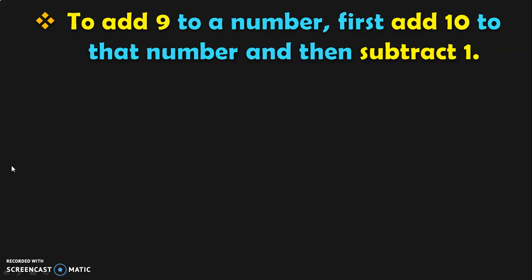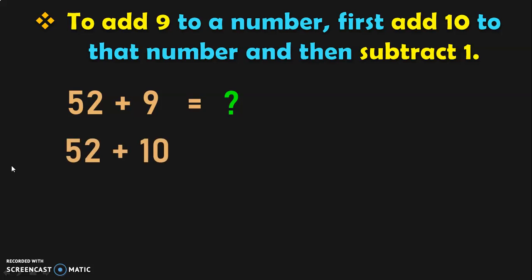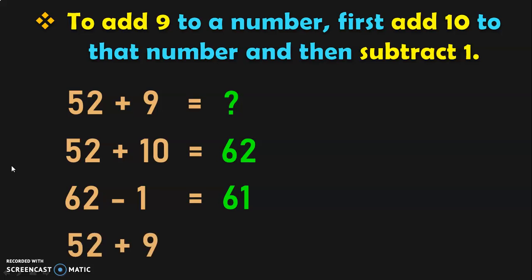To add 9 to a number, first add 10 to that number and then subtract 1. Let us see this with examples. 52 plus 9: to add 52 plus 9, quickly add 52 plus 10 which gives you 62. Now subtract 1 from 62. 62 minus 1 gives you the answer 61. So, 52 plus 9 is equal to 61.